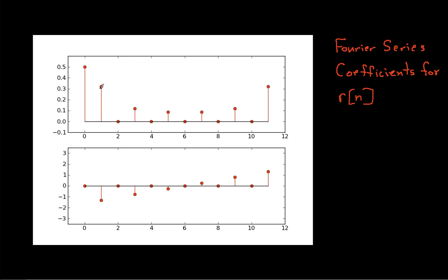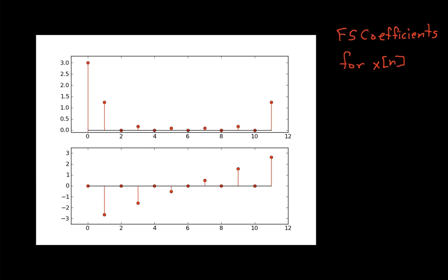When you take this and square it, basically you'll square this magnitude and multiply it by N. And you'll multiply the phase angle by 2. And if you look at the Fourier series coefficients for x, you'll see that indeed the phase angles have been multiplied by 2.